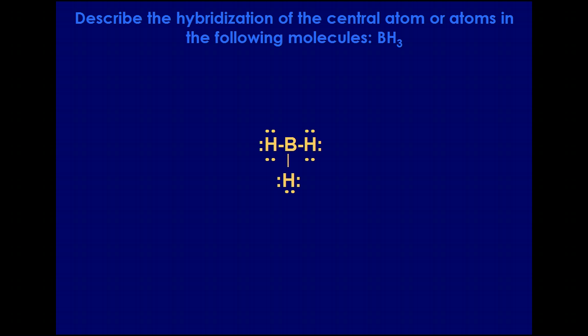For BH3, there are three pairs of electrons surrounding boron, so we need three orbitals. We always start with an s and add p's, so we only need two p orbitals, giving us sp2.